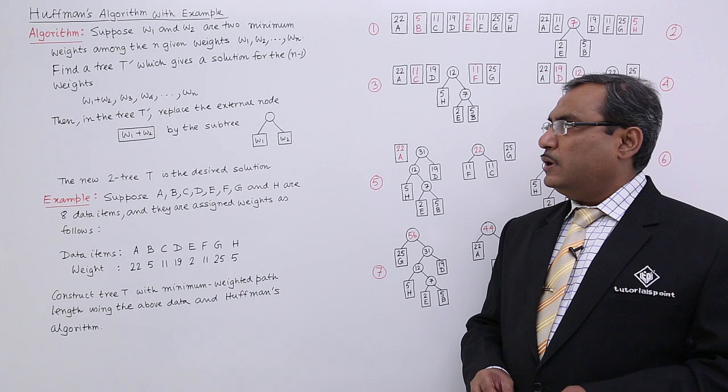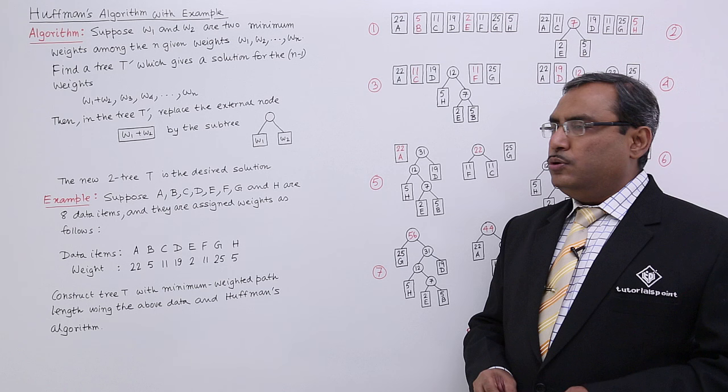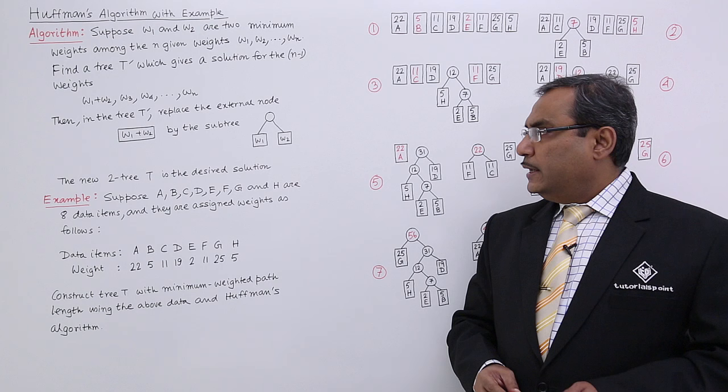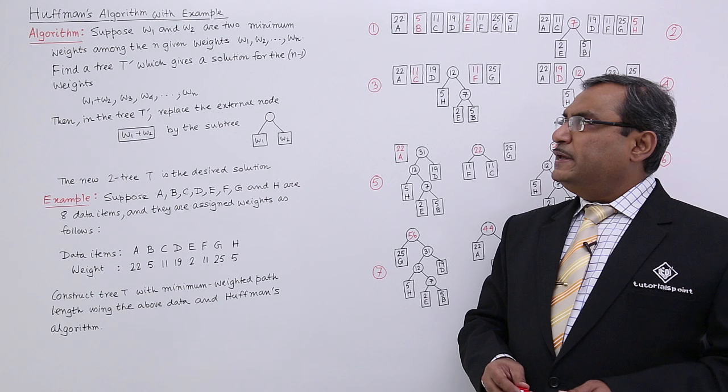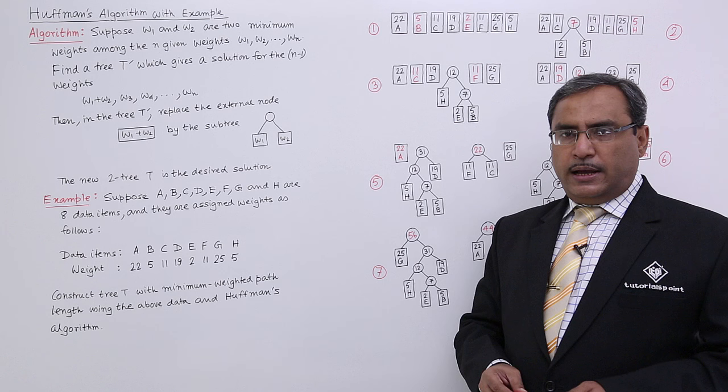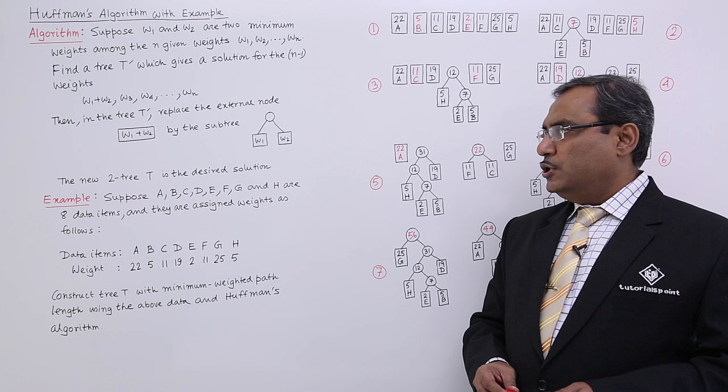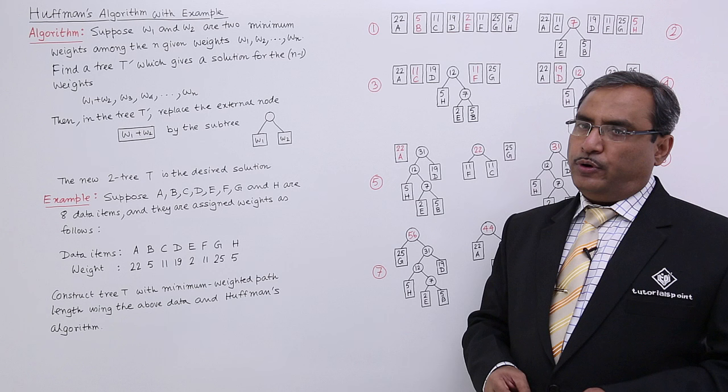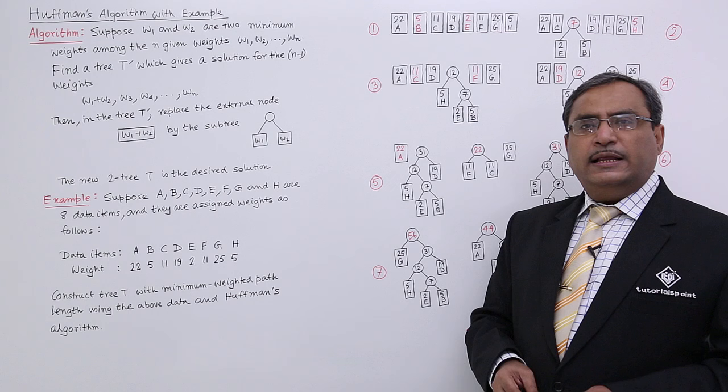Then in the tree T dash replace the external node W1 plus W2 by the subtree. The new two tree T is the desired solution. That means using this Huffman's algorithm we can form one Huffman's tree and the tree will be formed not in the top down approach but in the bottom up approach and this particular algorithm will be used in a recursive way. To get a better understanding on this particular Huffman's algorithm, let us go for one example.